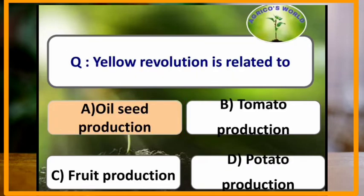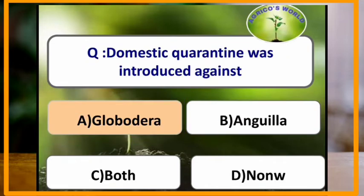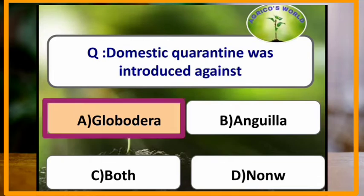Yellow revolution is related to which of the following? Yellow revolution is related to the production of oilseeds. Domestic quarantine was introduced against which organism? Domestic quarantine was introduced against Globodera.